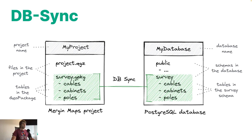Merging Maps is based on GeoPackages, which is a local SQLite database. DB Sync synchronizes this database with a Postgres schema — the same tables will have the same features across both sources.